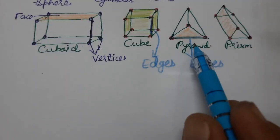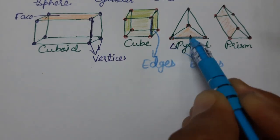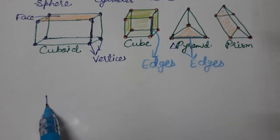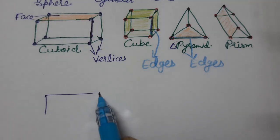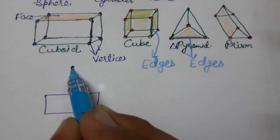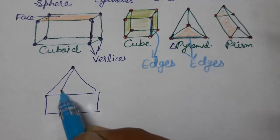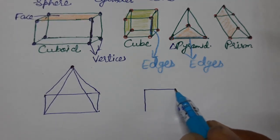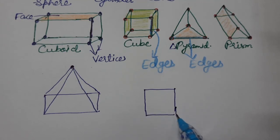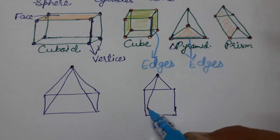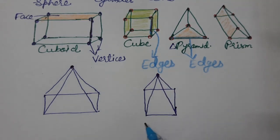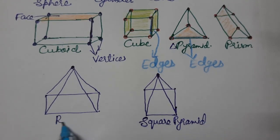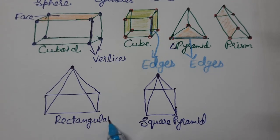A triangular pyramid has a triangle as its base. We can also make a square pyramid, whose base is a square, or a rectangular pyramid, whose base is a rectangle. If you take a square base and add one vertex on top, you get a square pyramid. A rectangular base gives a rectangular pyramid.